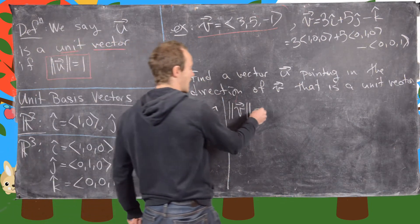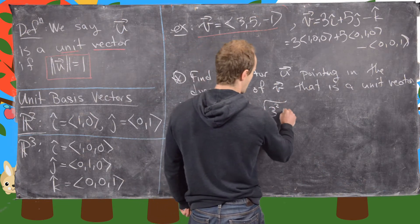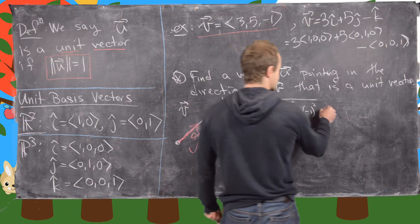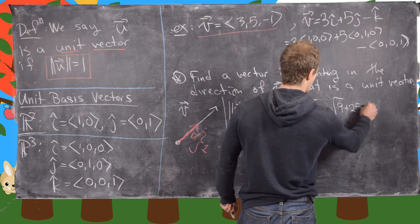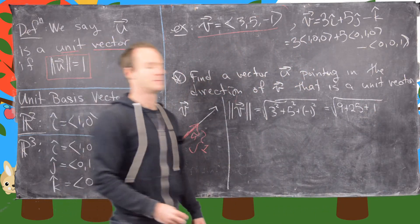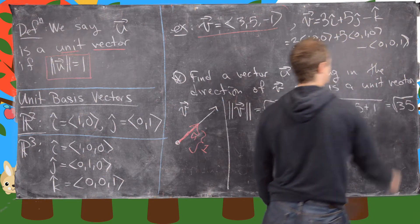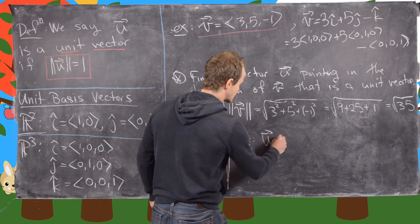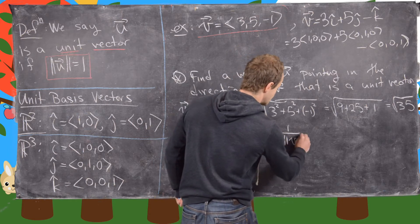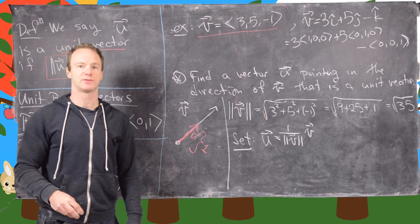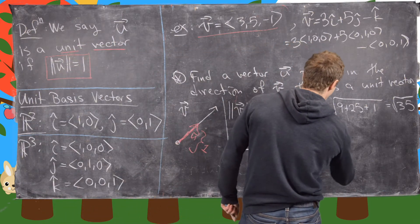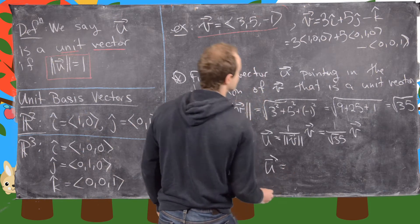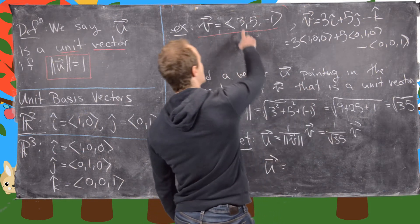The length of v is found by the square root of 3² + 5² + (-1)², using the length formula for a vector. That equals the square root of 9 + 25 + 1, which is the square root of 35. Now we set u equal to (1 over the length of v) times v — that scalar multiple of v. So u equals (1 over √35) times v.